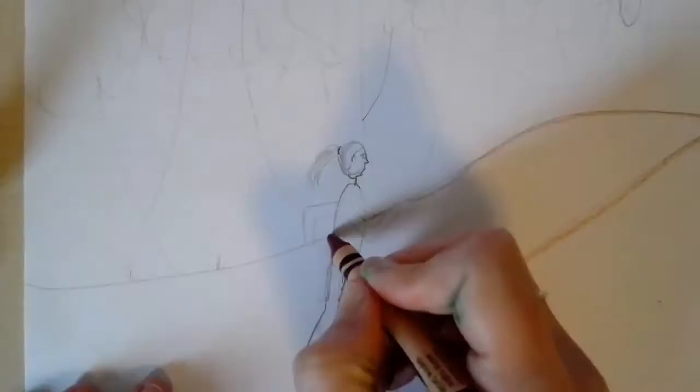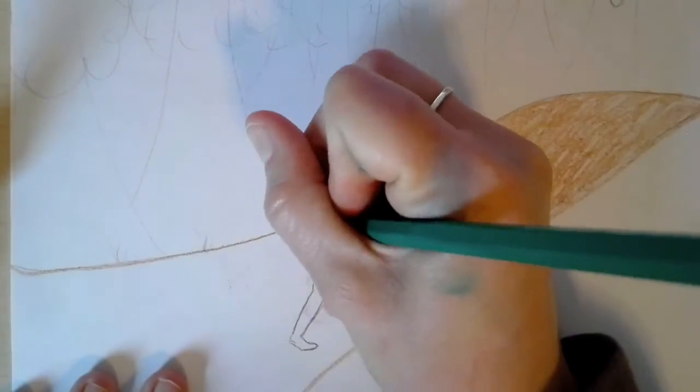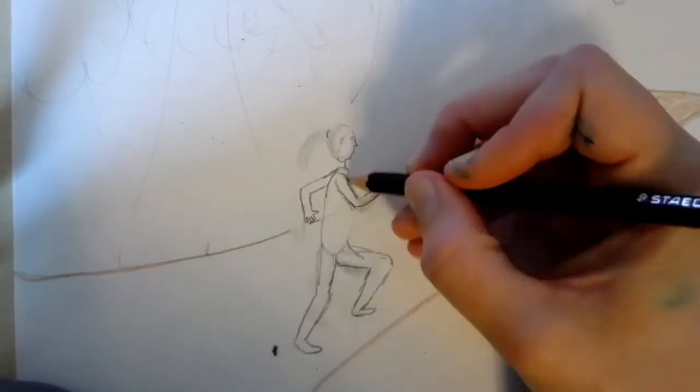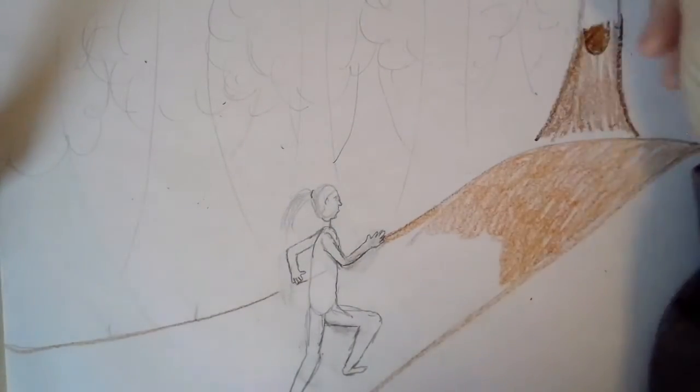Once I get the whole drawing completed, I will use crayons to add color to my drawing. You can use any material you have access to. I'm going to start by filling in the background and working my way forward.